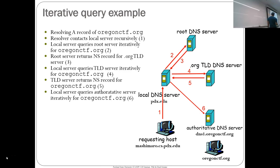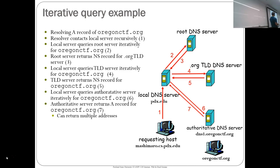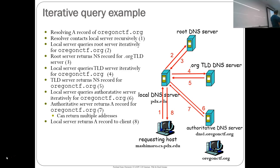The .org TLD says it doesn't know the name either, but knows the authority for OregonCTF.org, so it returns the NS record — DNS1.oregonctf.org. Then the local server queries DNS1.oregonctf.org, and of course this authority knows the name and passes back the record. Note that this name could resolve into multiple IP addresses, which we'll get to with content distribution networks. Because this was a recursive query on the first link, the local DNS server returns the final result to the requesting host. This is typically how DNS is done in live operation, and you'll emulate this using manual dig commands.